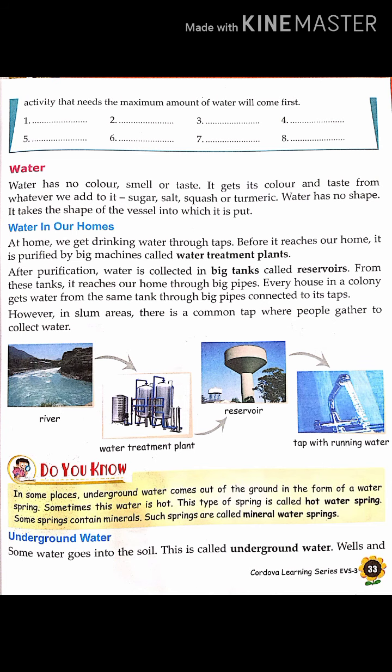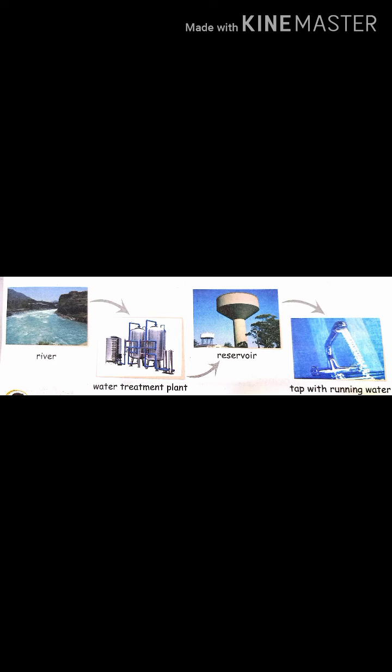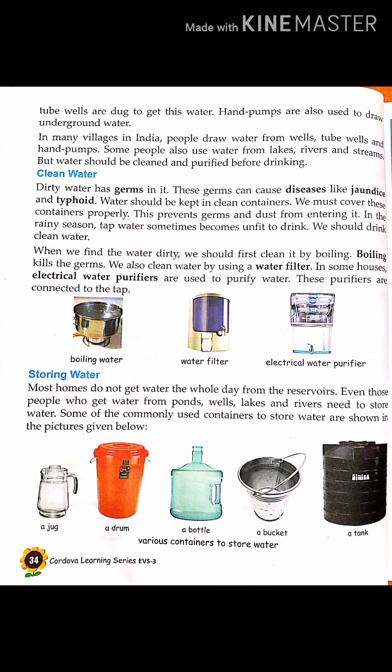See the picture clearly. First, water is collected from the river into the water treatment plant. Then it is transferred to the reservoir — the big water tank. Through pipes attached to the big tanks, it comes to our tap. Underground water: when rain falls, some water goes into the soil. That type of water is called underground water. We draw this water from the soil through tube wells and wells.